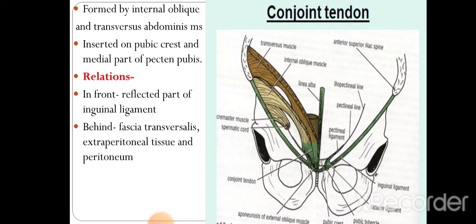The conjoined tendon inserts on the pubic crest and the medial part of the pecten pubis. In front of it is the reflected part of the inguinal ligament, and behind it are the fascia transversalis, extraperitoneal tissue, and the peritoneum.